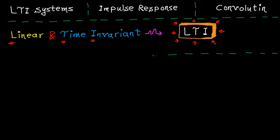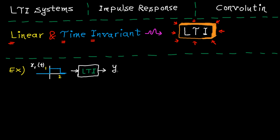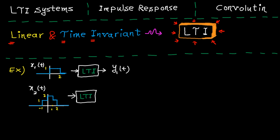To clarify that, I'm going to show you two simple examples. First example: by applying this input to an LTI system, we get Y1(T) at the output. Now, the question is, if we apply this input to the same system, what is the output in terms of Y1(T)?